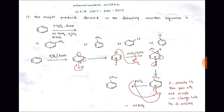First, we need to know some chemistry of pyridine. Pyridine is very unreactive because of the stability of the three pi bonds in it. It is unreactive towards direct electrophilic substitutions like nitration, halogenation, and Friedel-Crafts acylations. To activate the pyridine ring towards electrophilic substitution reactions, we use different methods.